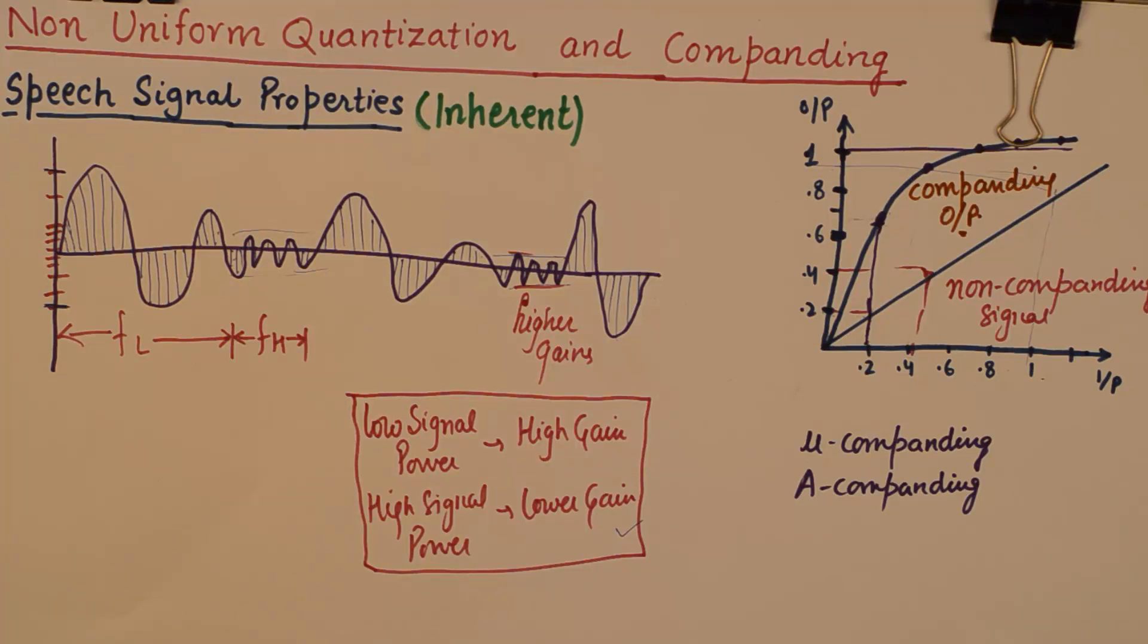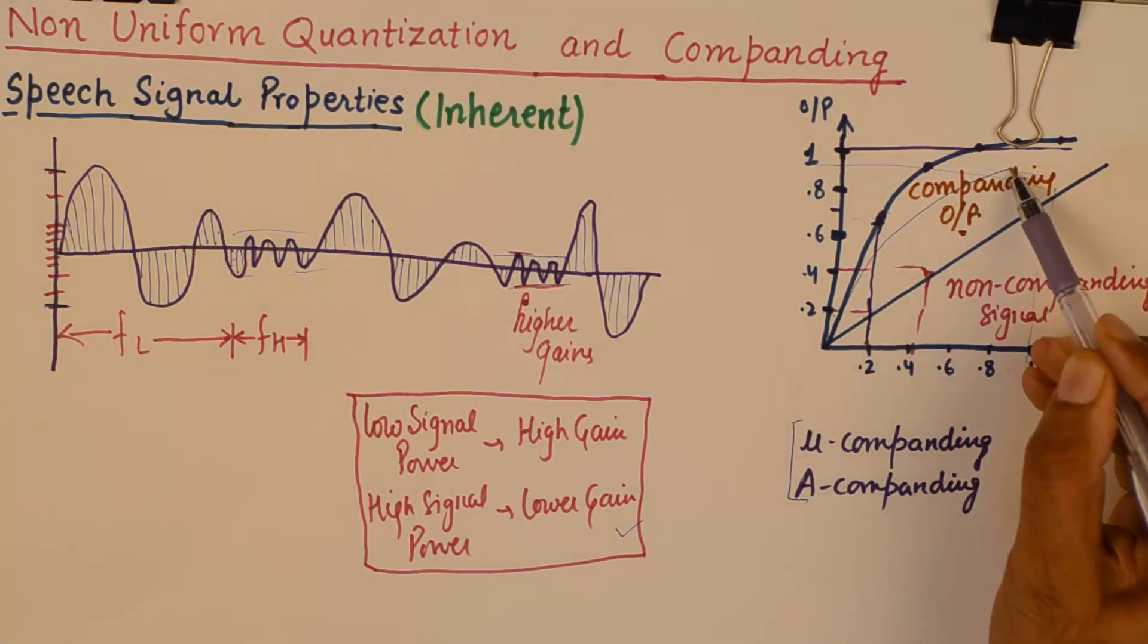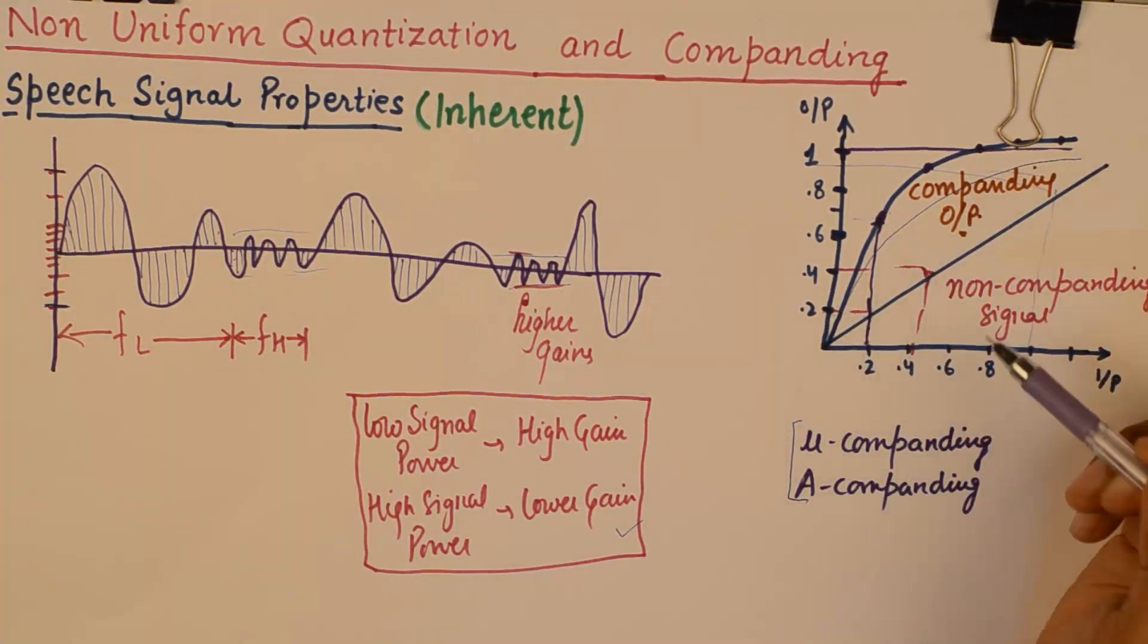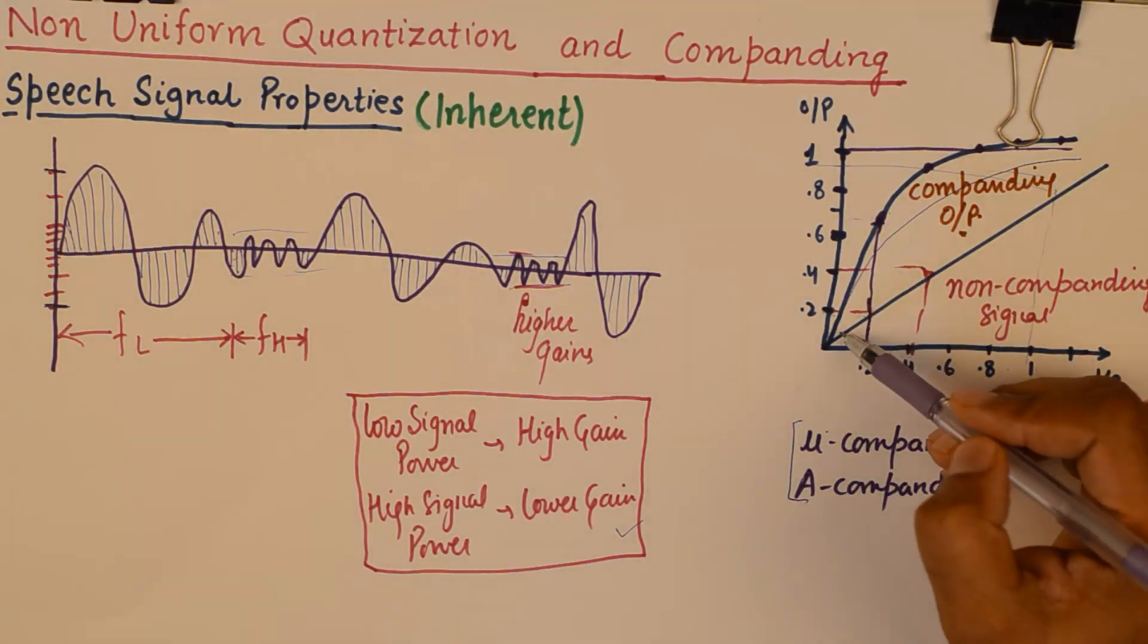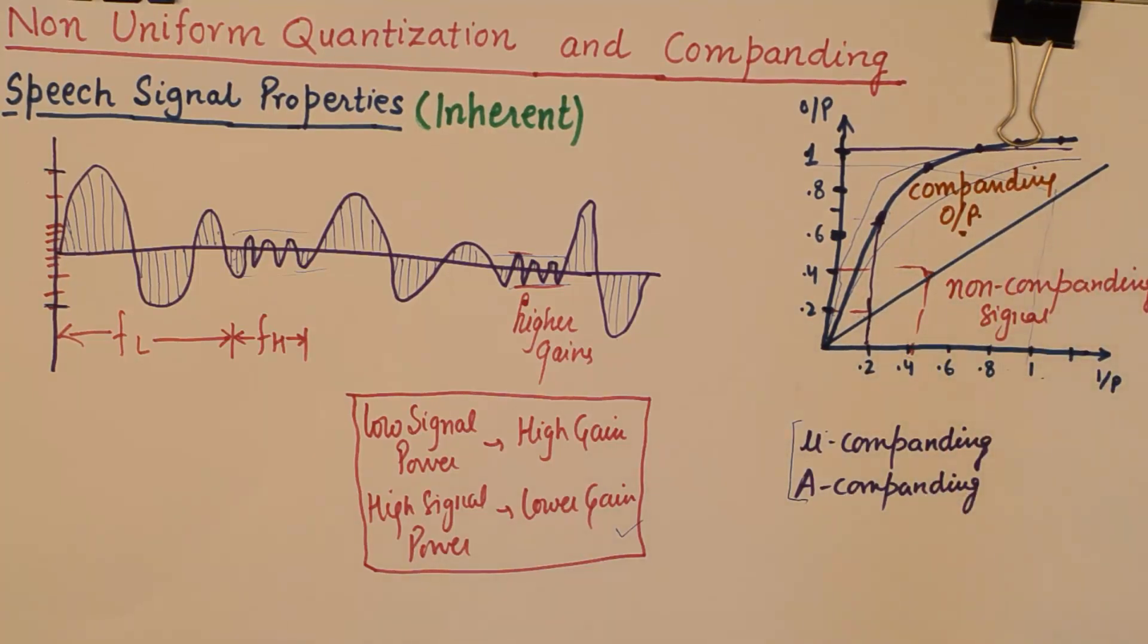And I will talk about the types of companding that we do. That is mu companding and A companding. These type of companding can change the curves. If we do not want a sharper curve, we can change the value of mu in mu companding. And if we want to have more sharper curve or different types of curves at the output, then we could change the values of mu and A in these techniques. I will talk about that in the next video.